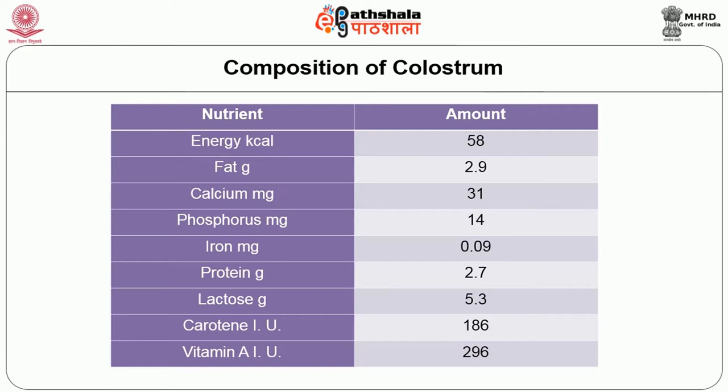The composition of colostrum is given in the table. Energy is about 58 kilocalories. Fat content is about 2.9 grams. Calcium is about 31 milligrams. Phosphorus is about 14 milligrams. Iron is about 0.09 milligrams and protein is about 2.7 grams. The lactose content in breast milk is about 5.3 grams.